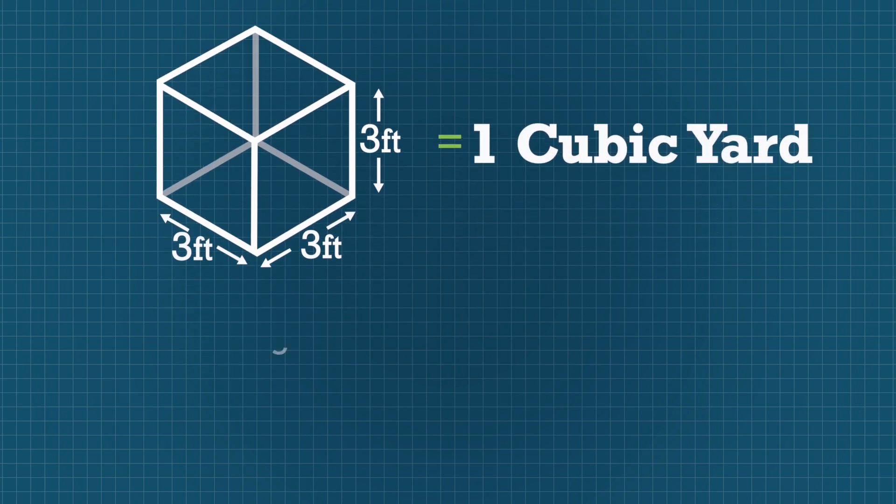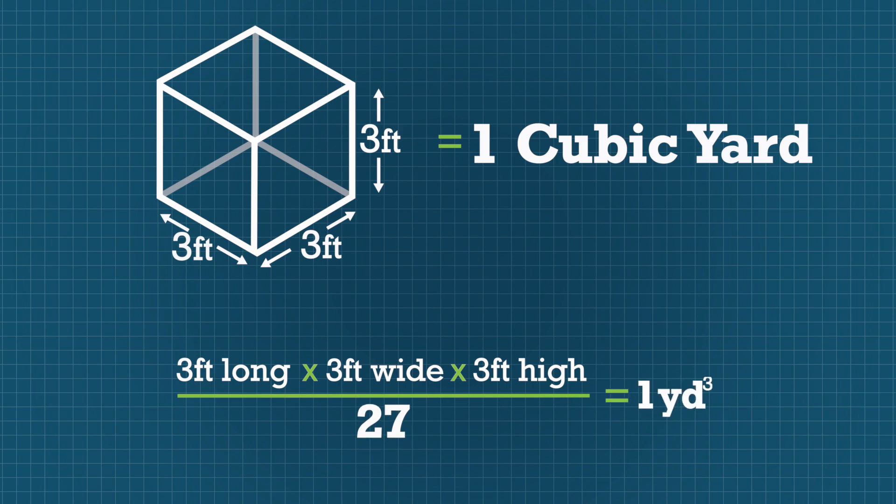Cubic yards are calculated by multiplying length times width times height and dividing by 27. This calculation is also applied to dumpsters.